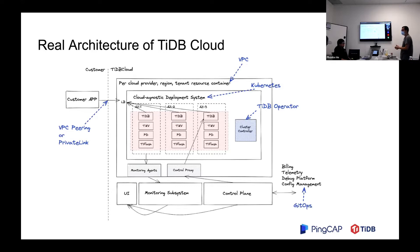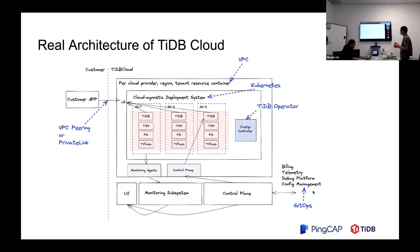For customer access, we provide two ways. The first is VPC peering — basically connecting two VPCs. The second is Private Link — we provide an endpoint for the customer to connect. For config management, we use GitOps. With GitOps, the SRE can just change the config and push to all clusters without touching those clusters — everything is automatic.